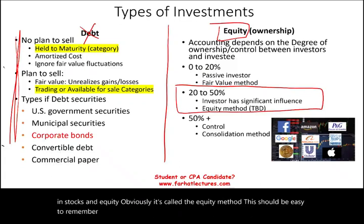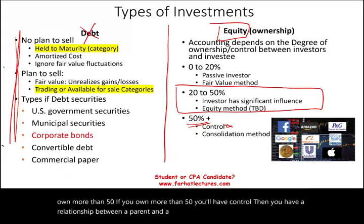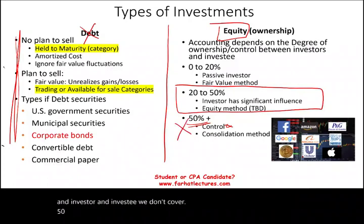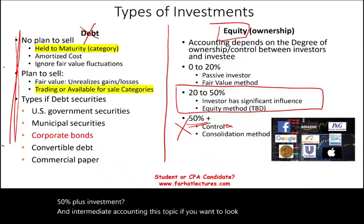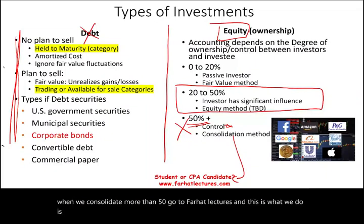You own more than 20 but less than 50%. What happens if you own more than 50%? If you own more than 50%, you'll have control — then you have a relationship between a parent and a subsidiary, an investor and an investee. We don't cover 50%-plus investment in intermediate accounting. If you want to look at consolidation, go to Farhat Lectures, where we cover consolidation in depth.